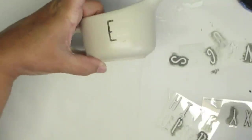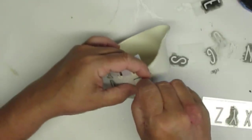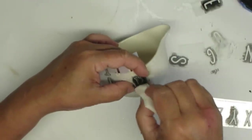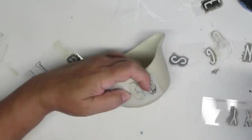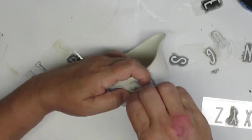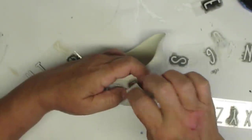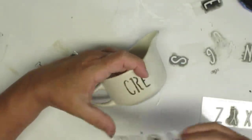I always start in the center of the word so for the word cream the E is the exact center so I center that onto my project and then I work backwards and then I move forwards on the other side of the E and that to me just helps me make everything nicely centered.